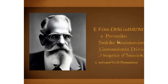Emil Durkheim's The Division of Labor in Society is a seminal work in sociology that examines the nature of social order. Durkheim argues that social order is maintained through the division of labor, which is the specialization of tasks among individuals in a society. Durkheim identifies two types of division of labor: mechanical and organic.